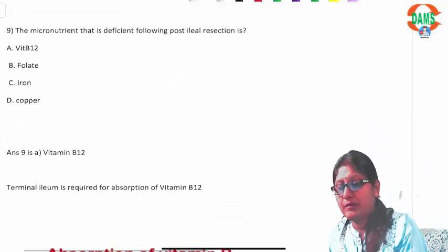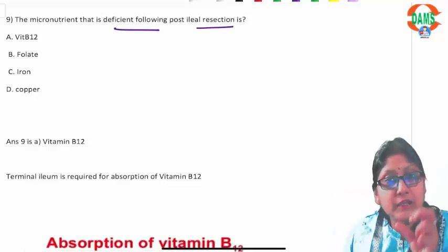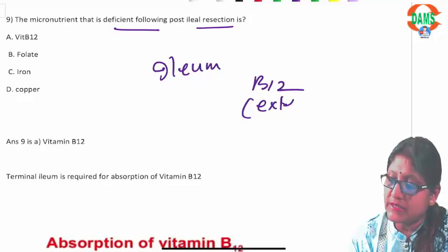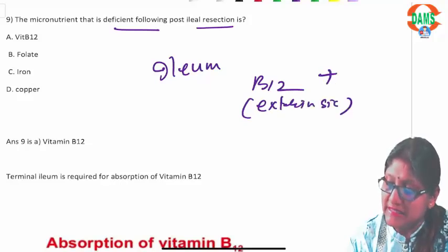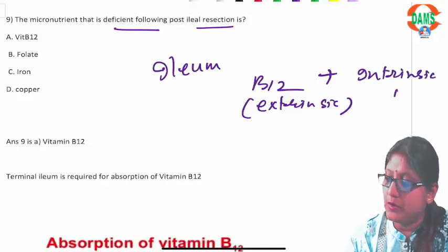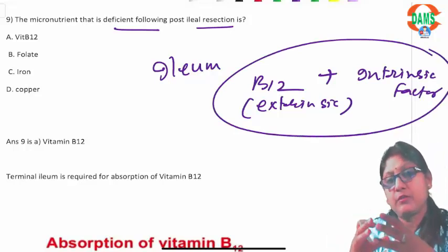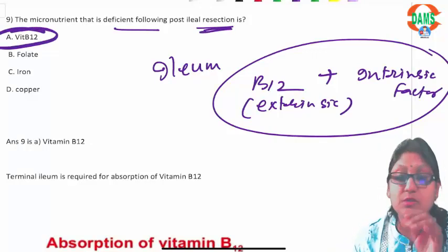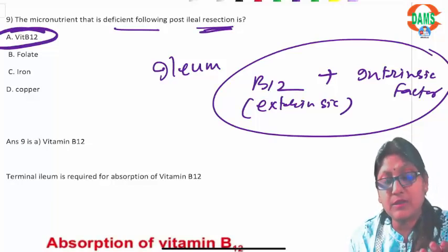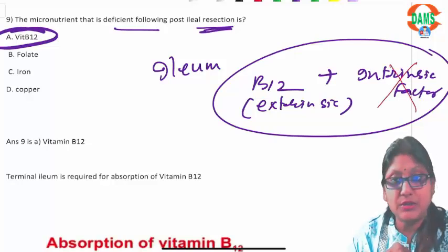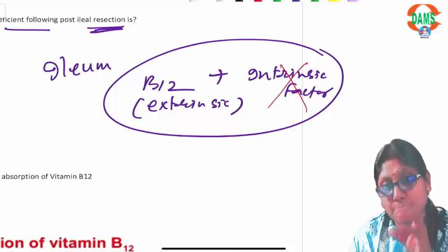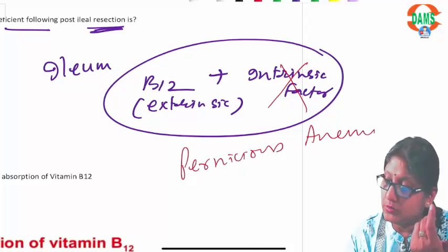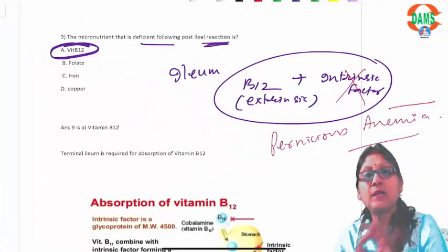Question nine: the micronutrient deficient after ileal resection. The ileum is the site where vitamin B12 is absorbed. Vitamin B12, the extrinsic factor, needs intrinsic factor for absorption — they form a complex absorbed through the ileum. After ileal resection, vitamin B12 will be deficient. Also, if intrinsic factor is not secreted due to autoimmune parietal cell damage, B12 is not absorbed — this is pernicious anemia.